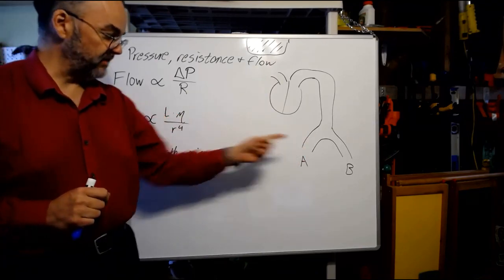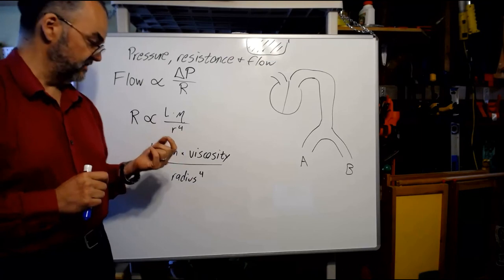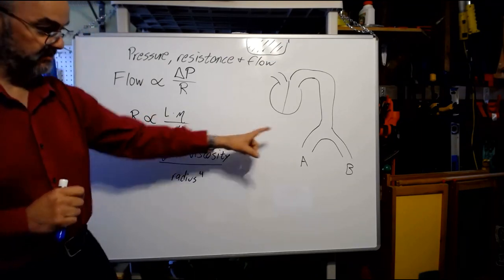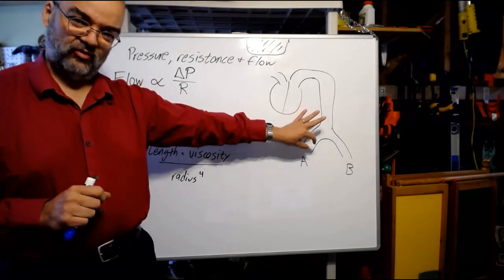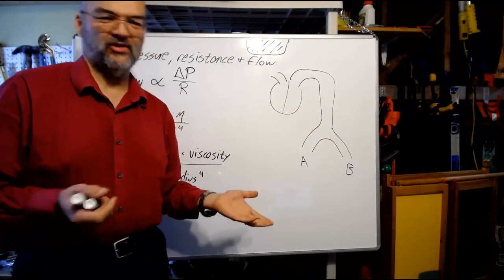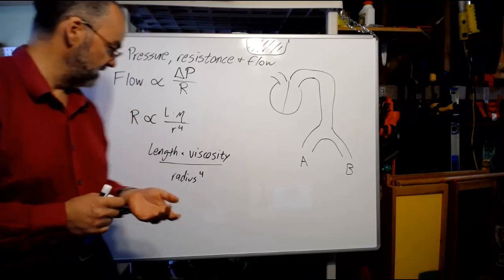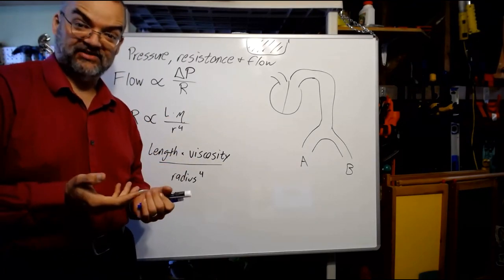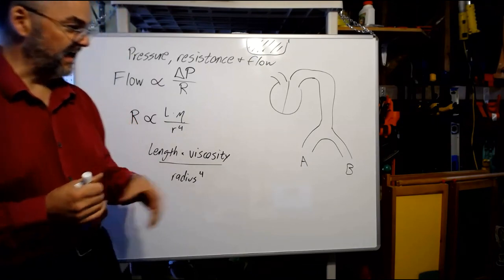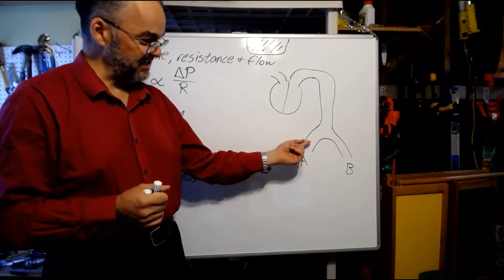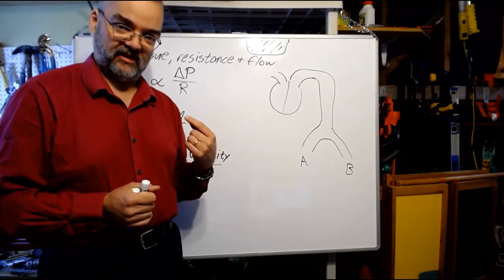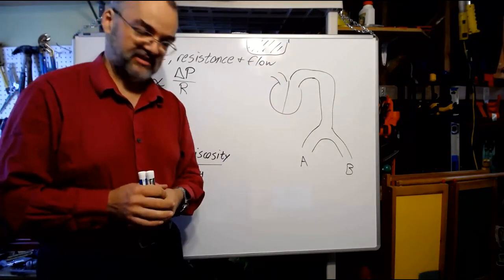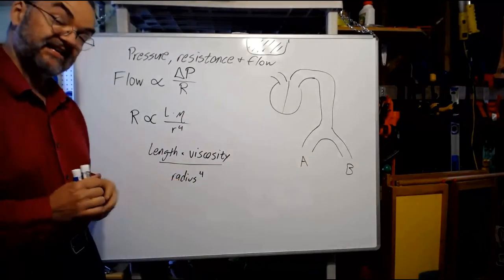So I'm left with how can I affect the resistance to flow. So if I want to increase the flow to A, I need to lower the resistance. Well, I could make the length shorter. That would lower the resistance. But that's difficult to do. Or I could make the length to B longer, but also difficult to do. Growing new blood vessels takes a while. The viscosity of blood largely comes from the number of red cells and the amount of protein in it. And I don't have any easy way of changing that for one of these branches or the other. Those effects generally would apply throughout the entire blood flow system. But radius I can change.